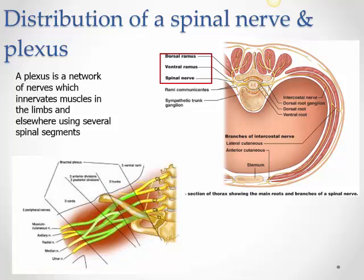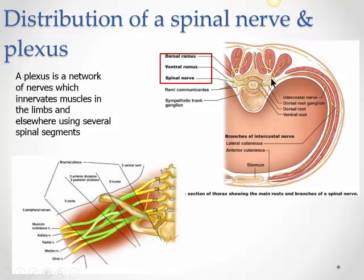We covered the spinal nerve previously — a mixed nerve connected to the spinal cord by two roots: the dorsal or posterior root, which is sensory, and the ventral or anterior root, which is motor. These roots join to form the spinal nerve, which exits through the intervertebral foramen and then divides into two branches. One branch, the dorsal ramus, goes to the back, supplying muscles and skin there — it carries both sensory and motor fibers.